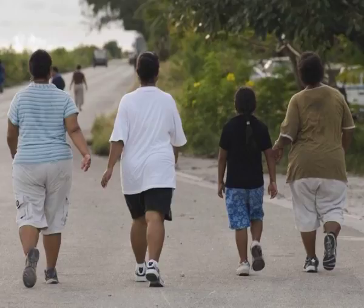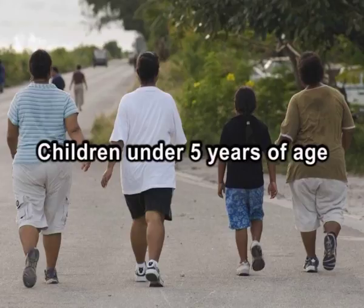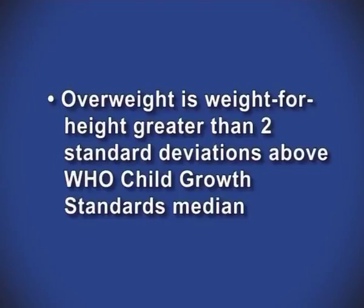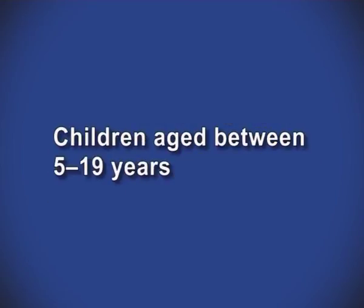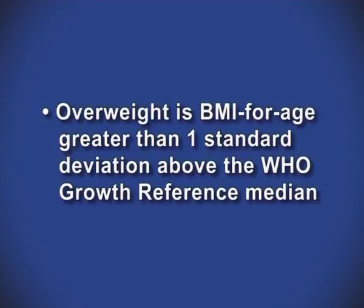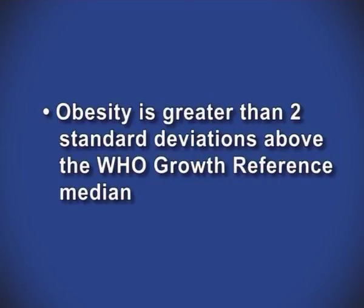For children, age needs to be considered when defining overweight and obesity. For children under 5 years of age, overweight is weight-for-height greater than 2 standard deviations above WHO child growth standards median, and obesity is weight-for-height greater than 3 standard deviations above the median. For older children, overweight is a BMI-for-age greater than 1 standard deviation above the WHO growth reference median, and obesity is greater than 2 standard deviations above the median.